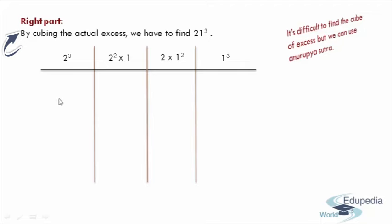So therefore, if you do 2 cube, you get 8. And 2 square into 1, which is equal to 4 into 1, you get 4. And 2 into 1 square, you get 2 into 1, which is equal to 2. And 1 cube, you get 1. After getting all the answers for these numbers, I am going to place one more horizontal bar.